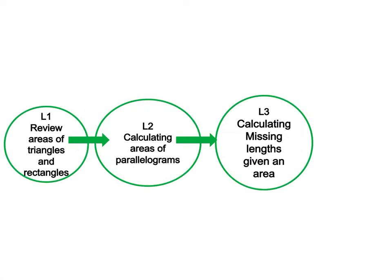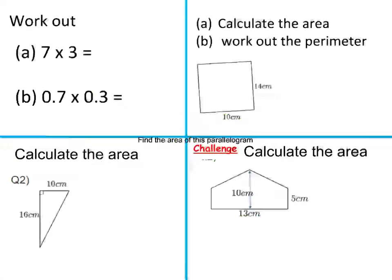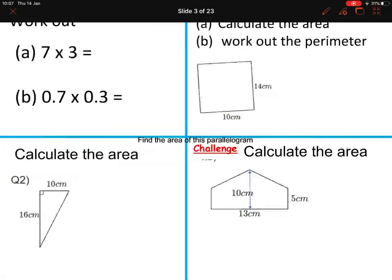Grab a pen, a pencil, and your pad, and let's start the lesson. Our learning objectives are: one, review areas of triangles and rectangles; two, calculating areas of parallelograms; and three, calculating missing lengths using the area of a parallelogram. Pause the video and have a go at the do-now task.